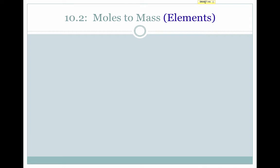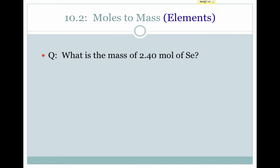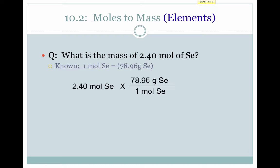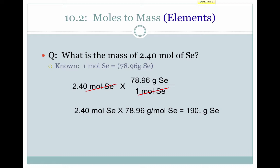We can use this information to convert between moles and mass. This is convenient because we can't measure moles directly in the lab — we can only measure mass. Consider this question: what is the mass of 2.40 moles of selenium? We know that one mole of selenium equals 78.96 grams from the periodic table. So we multiply our given, 2.40 moles of selenium, by the conversion factor 78.96 grams of selenium over one mole of selenium. Our moles cancel, and we get 190 grams of selenium.